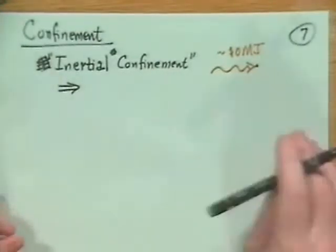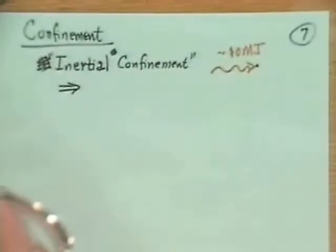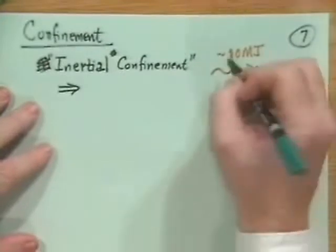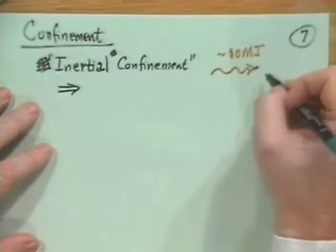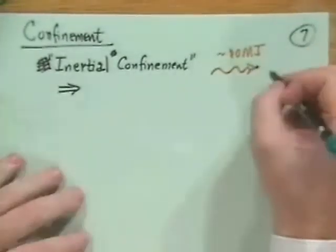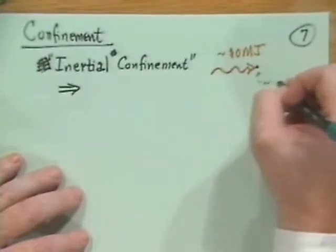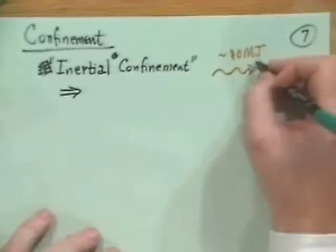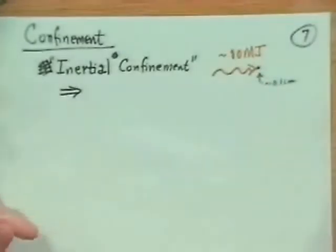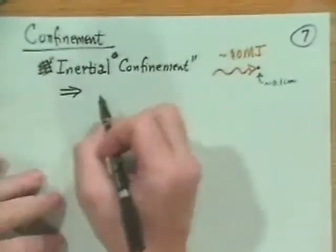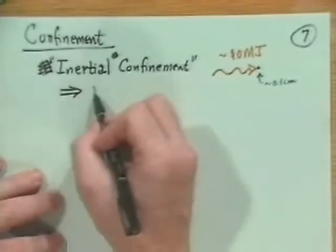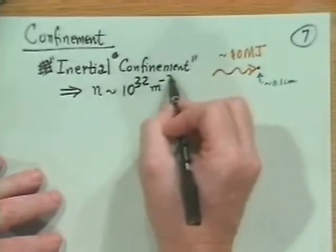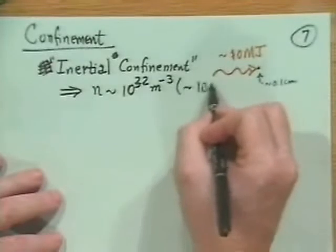By the way, a good unit of measure, although comical one, is that one megajoule is the amount of caloric energy in one jelly donut. You take this 10 megajoules of energy, bigger than the largest lasers presently available which are about 100 kilojoules, and compress a pellet about a tenth of a centimeter in size. You compress the pellet of DT to 1,000 times solid density, around 10 to the 32 per meter cubed.